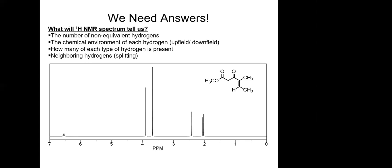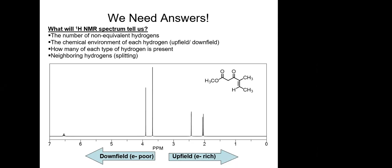The second thing is where the hydrogens are located — what the chemical environment is. Is it upfield or downfield? Upfield means towards zero, downfield means away from zero. It's very nuanced — a signal at 1.000 ppm moving to 0.999 would be an upfield shift; moving to 1.01 would be a downfield shift. Upfield protons are in electron-rich environments, and downfield protons are in electron-poor environments.